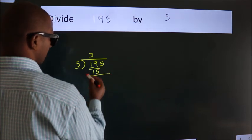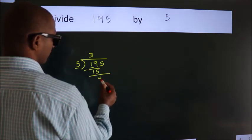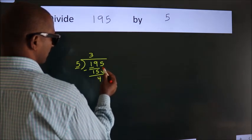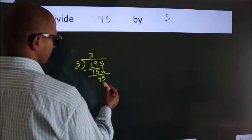Now we should subtract. We get 4. After this, bring down the beside number. So, 5 down. So, 45.